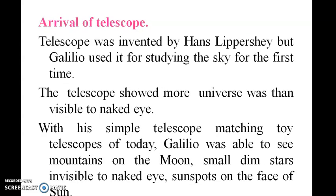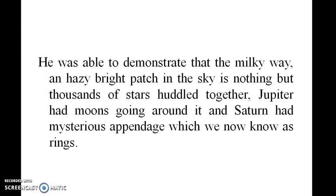The arrival of the telescope. The telescope was invented by Hans Lippershey. But Galileo used it for studying the sky for the first time. The telescope showed more of the universe than was visible to the naked eye. With this simple telescope, matching the toy telescopes of today, Galileo was able to see mountains on the moon, small dim stars invisible to the naked eye, sunspots on the face of the sun. He demonstrated that the Milky Way — the bright patch in the sky — is nothing but thousands of stars huddled together. He also found that Jupiter has moons going around it, and Saturn has mysterious appendages which we now know as rings.